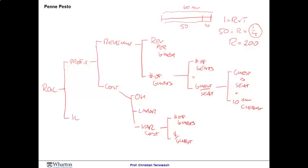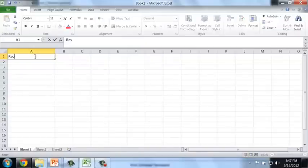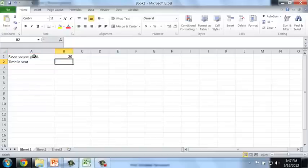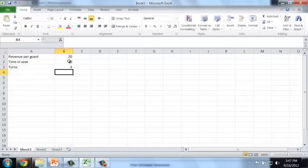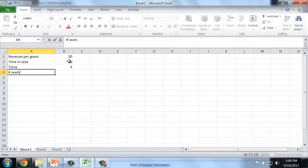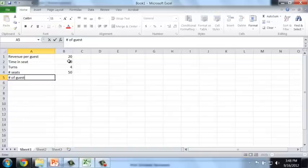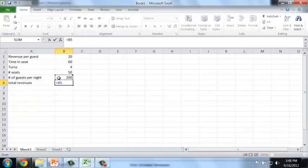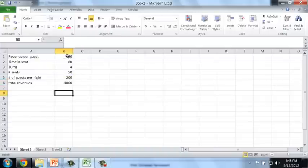I'll now turn to Excel and actually run the numbers. Alright, let's start with the revenue calculations. We begin by looking at the revenue that we get per guest, 20 bucks. Then we have the time that the guest is in the seat plus the cleaning time, which we said right now is 60 minutes. That allows us to turn the table 240 minutes divided by 60 equals to 4 times. Since we have a number of seats equal to 50, we can get number of guests first. Per night is simply the turns times the number of seats. And that is 200 guests per night. Next, we'll look at our total revenues. That's simply the 200 guests that we serve times 20 dollars per guest equals to 4,000 dollars revenue per evening.